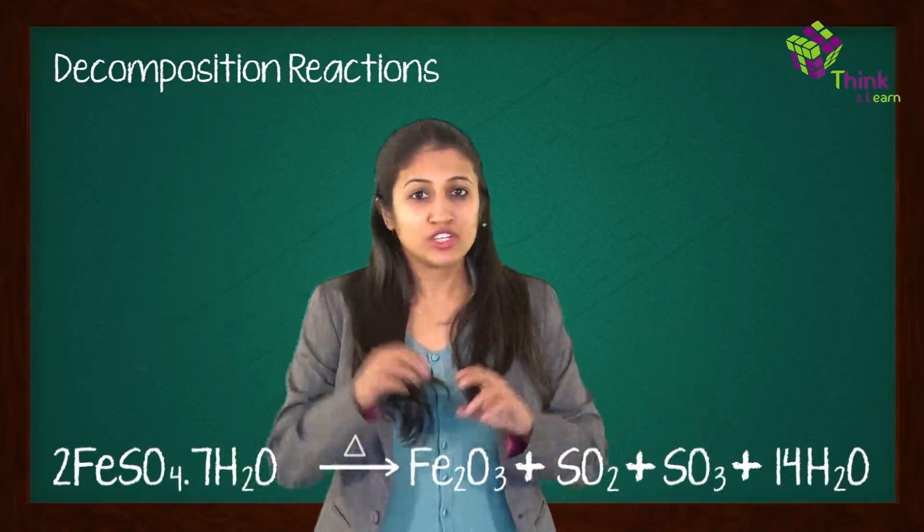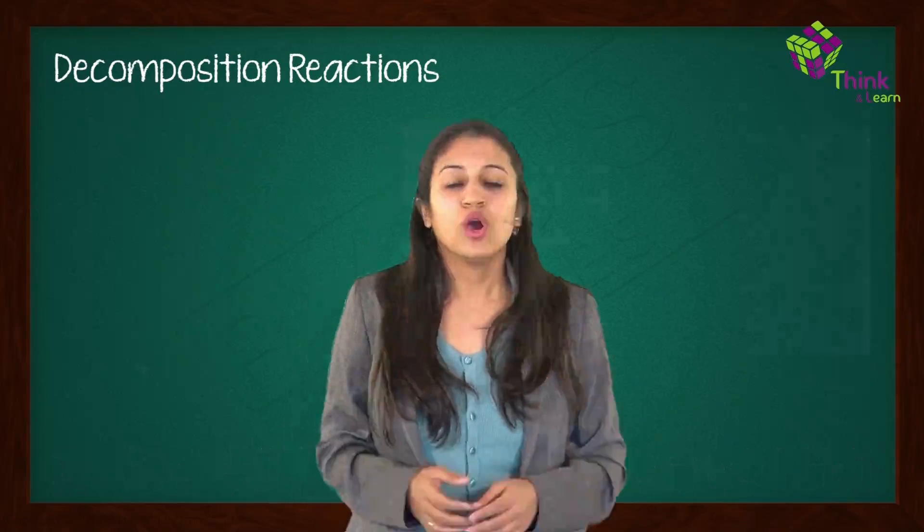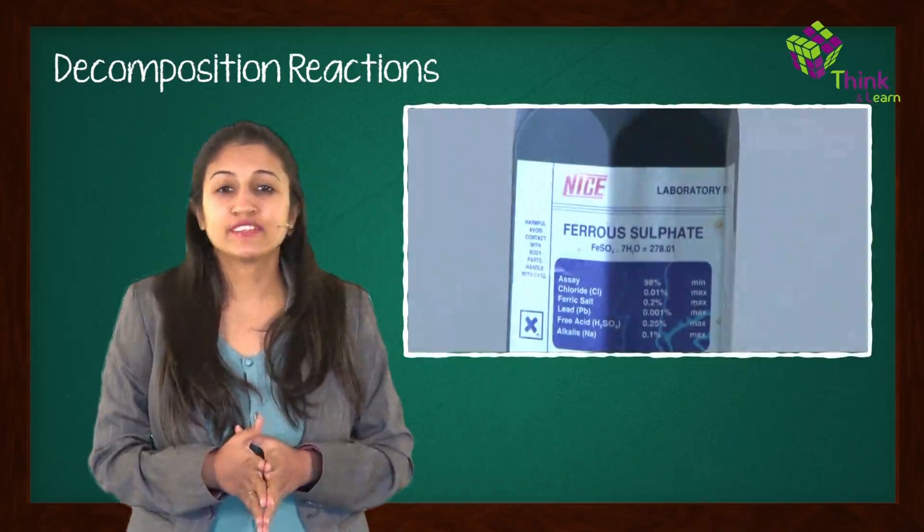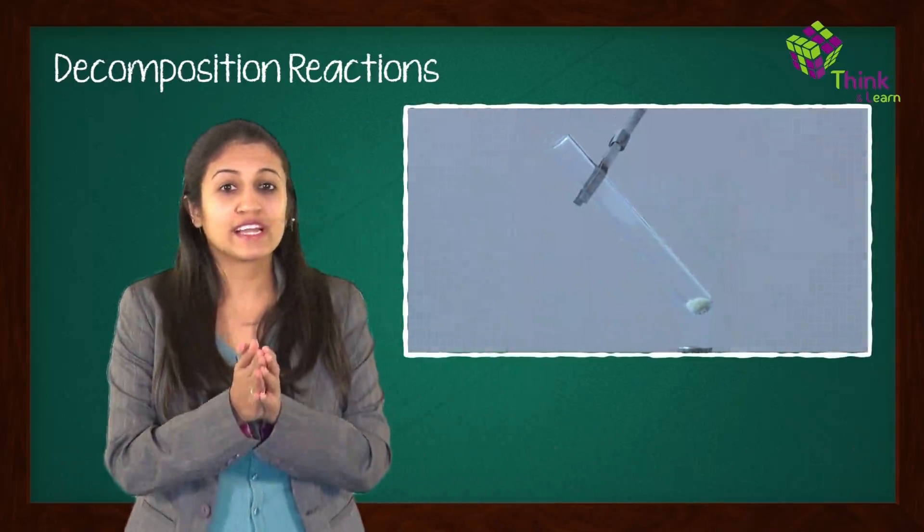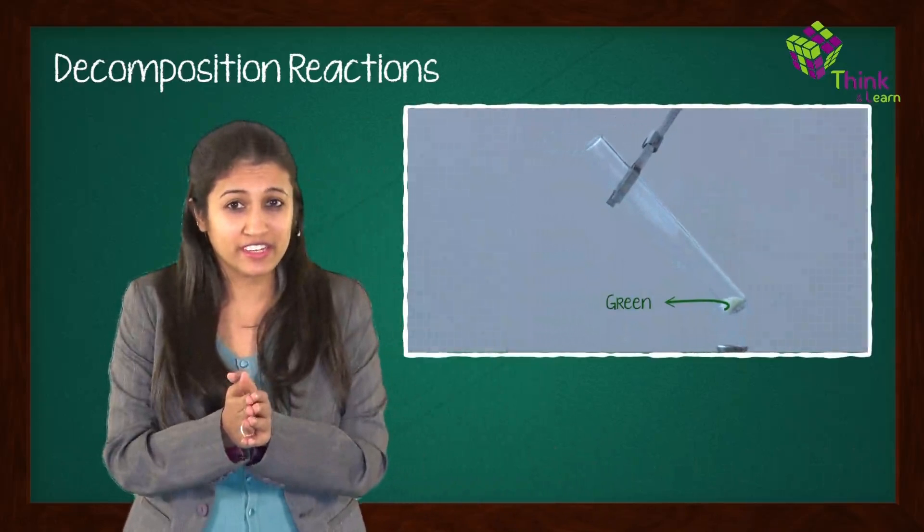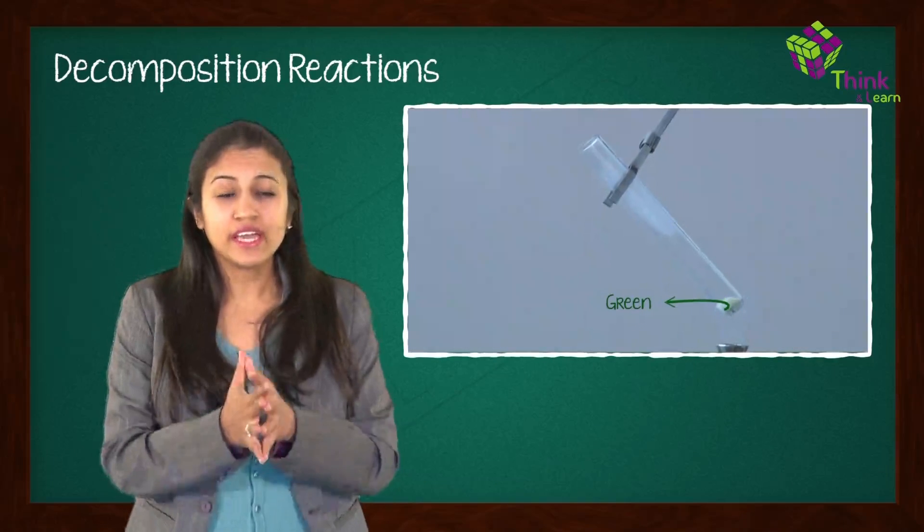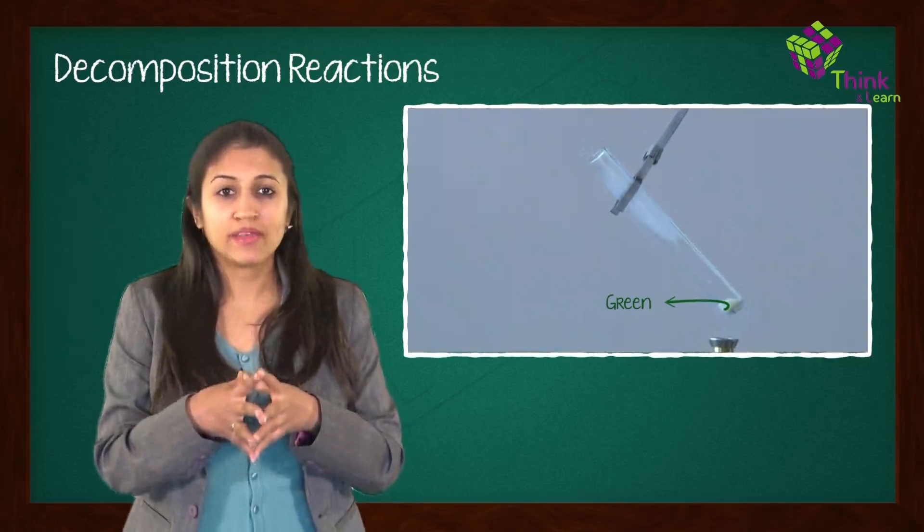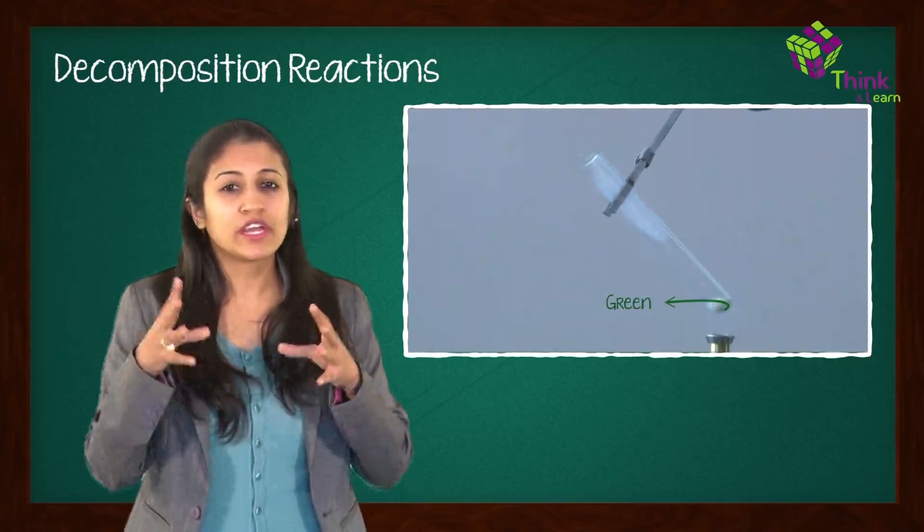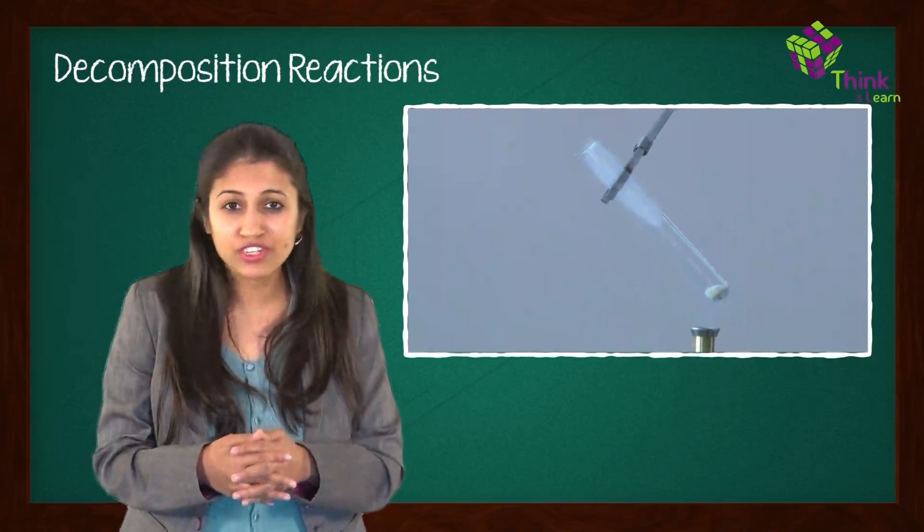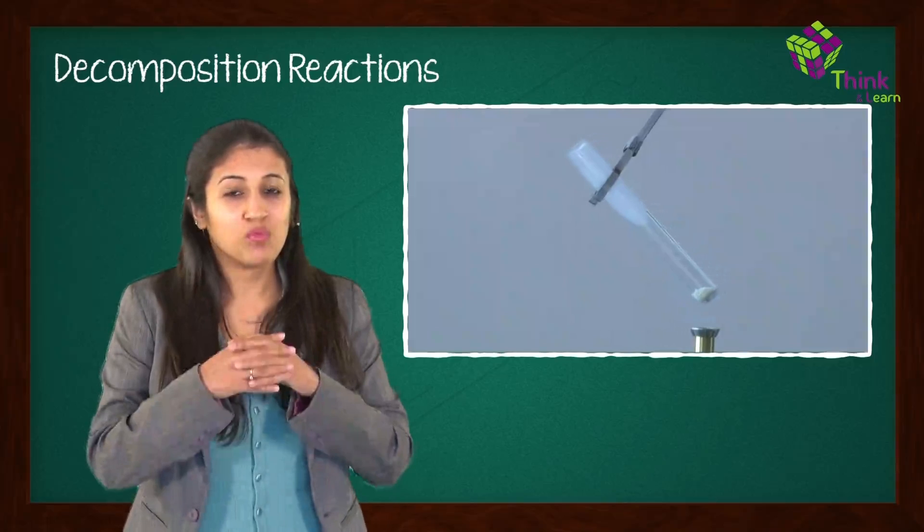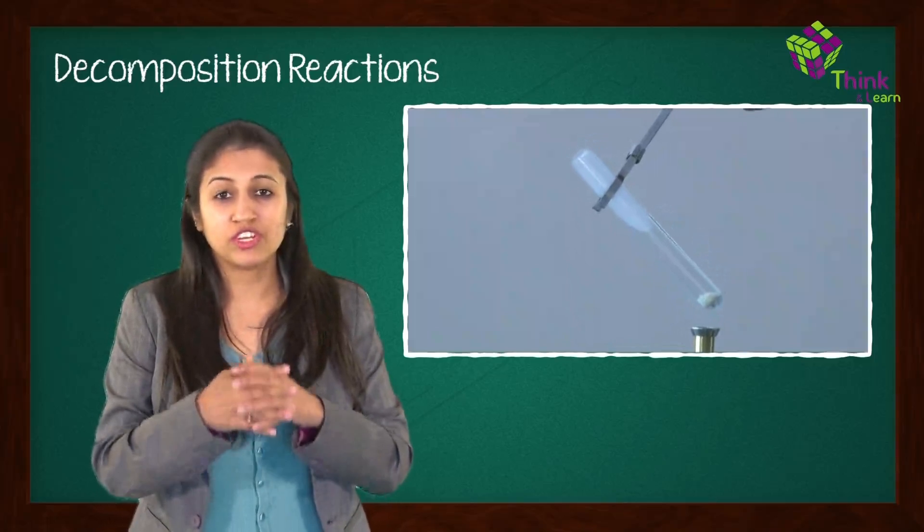Let's perform this experiment to actually see what happens. What you need to do is take some ferrous sulfate crystals in a boiling tube, and don't forget to note the color of the ferrous sulfate crystals. They're green in color. Heat the boiling tube over the flame of a burner till you can observe a color change. What is the color of the crystals after heating, and why is that happening? This is what we need to understand.